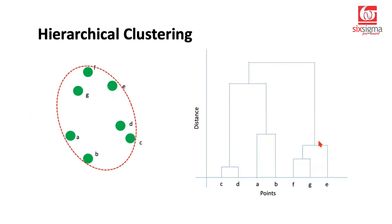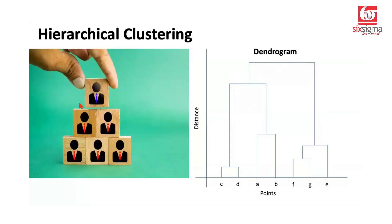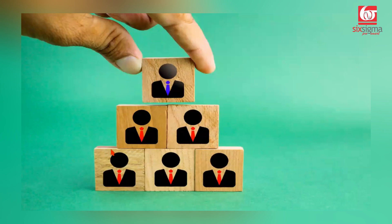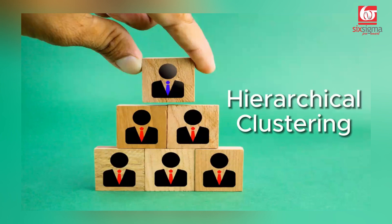So if you realize, we started by joining the closest points, then it became a comparison between points and points in a cluster, and finally between clusters, arriving at this structure. The graph obtained on the right is popularly known as the dendrogram — it's a tree graph. If you notice, this kind of resembles hierarchy charts in organizations, and that's why this approach is known as hierarchical clustering.